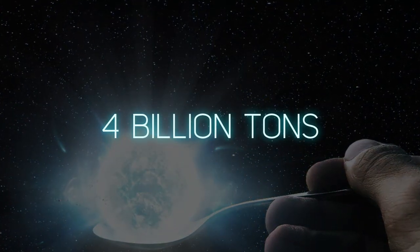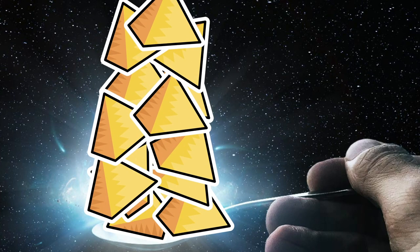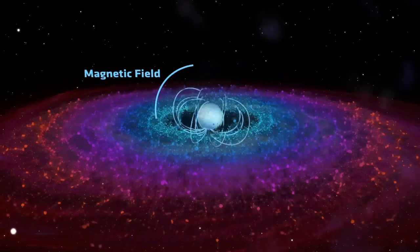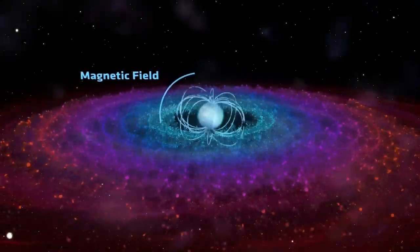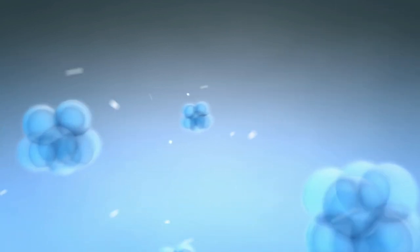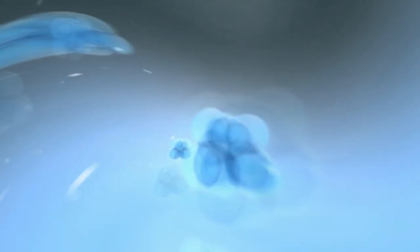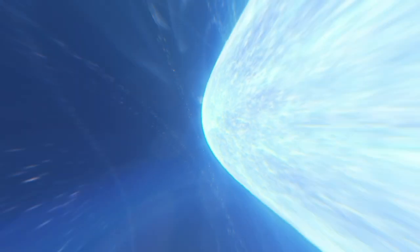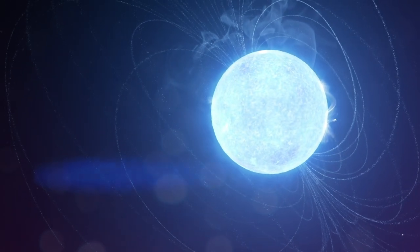NASA estimates a mere teaspoon of neutron star weighs over 4 billion tons, making it over 600 times heavier than the Great Pyramid of Giza. Neutron stars have incredibly strong magnetic fields, on the order of trillions of times that of Earth's, that can even alter the natural arrangement of atoms, stretching them into noodle-shaped electric field lines. Magnetars are a rare type of neutron star that possess magnetic fields another 1,000 times stronger.